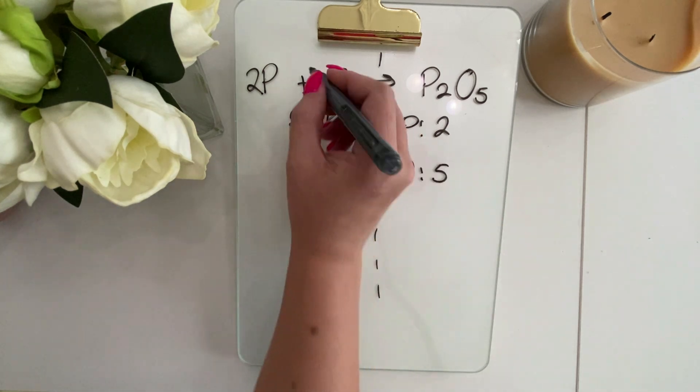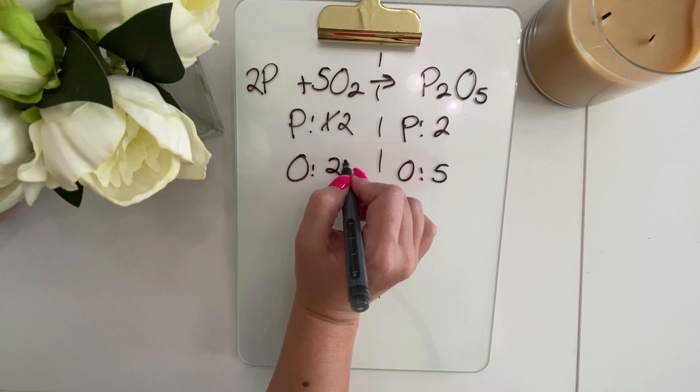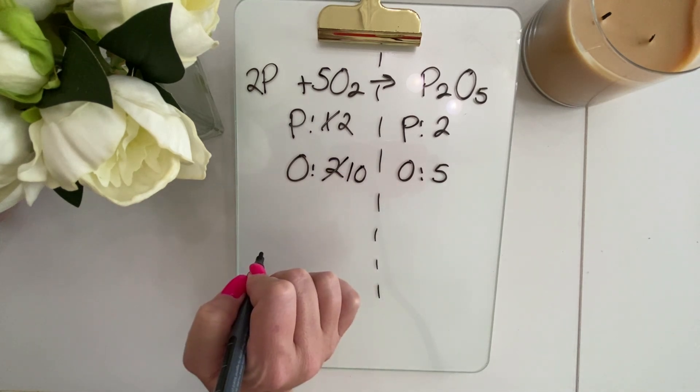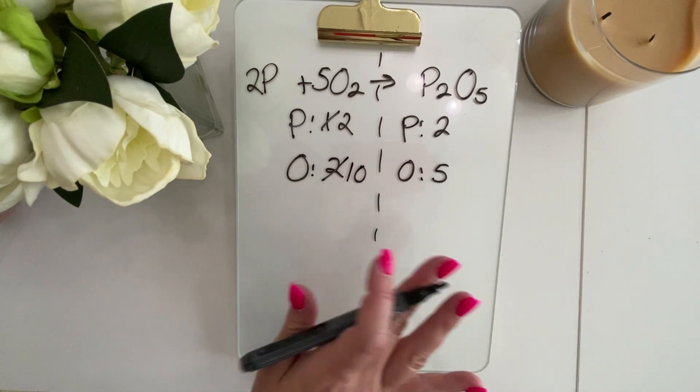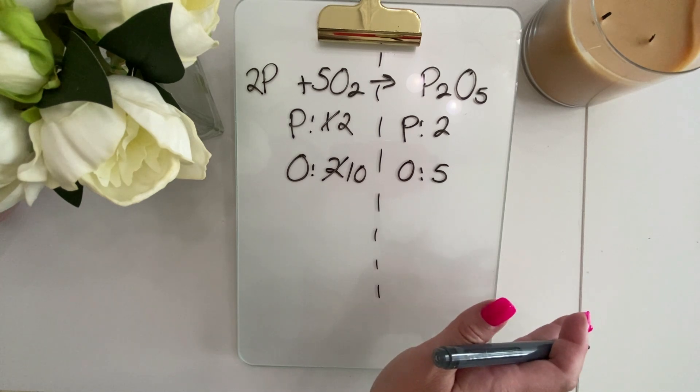We're going to use this five over here and do five times two, which is going to give us 10 oxygen. It seems like a big number. Don't be scared. If we're wrong, we can always go back and fix it.